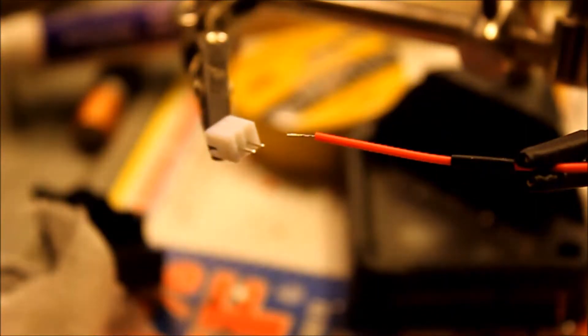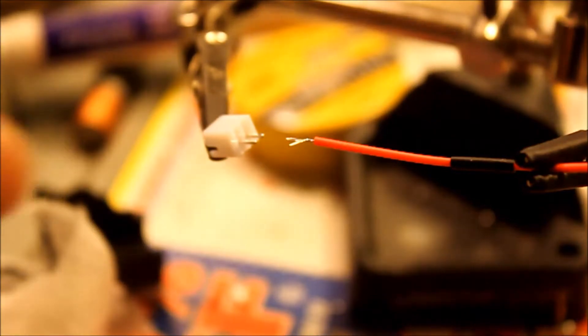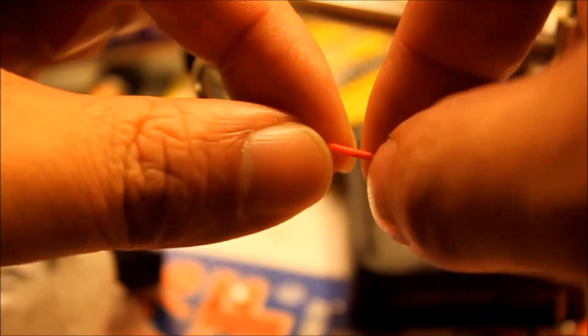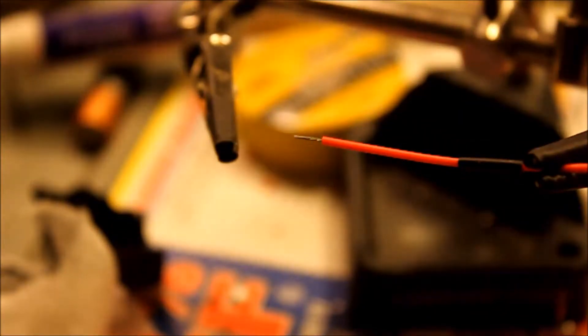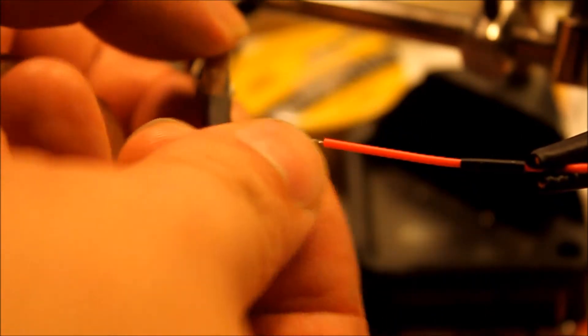First, again, this one is a 26 gauge stranded tinned wire. So you want to twist it. You don't have to twist it if you don't want to. It's fine as long as it remains flat and flushed.